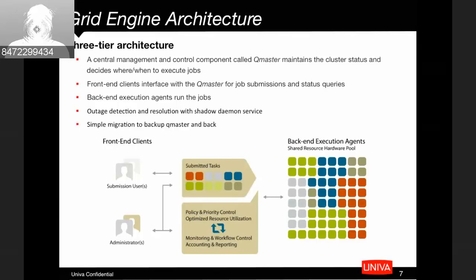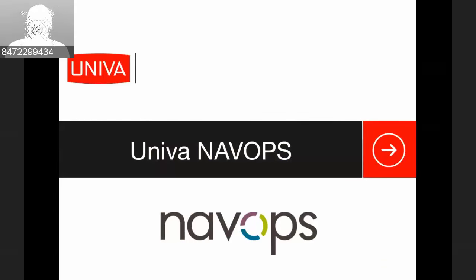In the three-tier architecture there are a variety of interface points: a command line interface, as well as a number of APIs including a RESTful API and one using a distributed resource management standard. The brains of the operation is something we call our master host or queue master host. This is where policies actually get put into place as workload comes in in real time and needs to be scheduled out to the backend execution agents. I'll hand it back to Rob now.